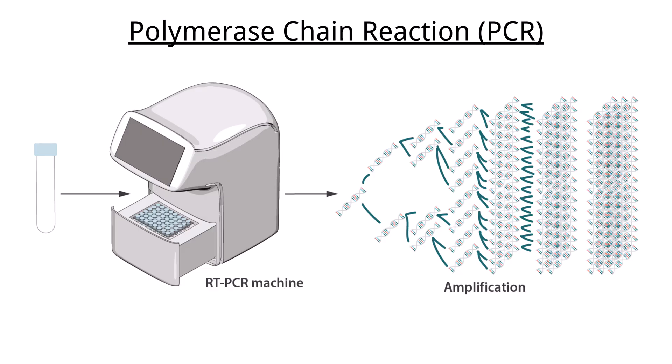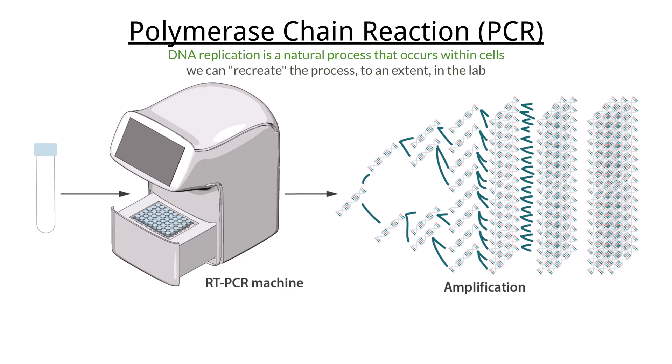DNA replication is a natural process that occurs within cells that need to divide. But humans have found a way to recreate it, to an extent, in the lab that creates new use cases for the process. Scientists can make copies, or artificially replicate, DNA strands through a process called polymerase chain reaction, or PCR for short.